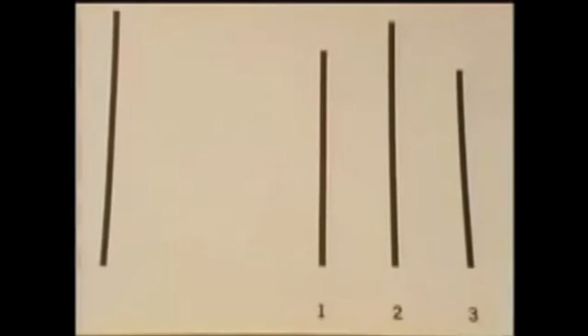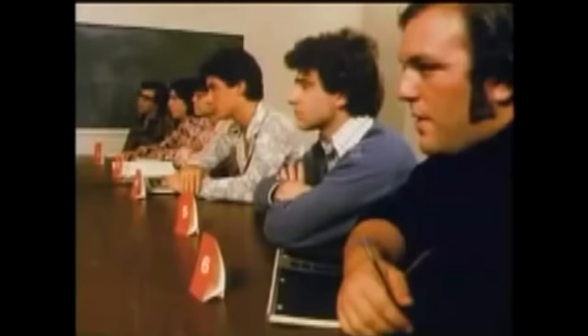They must be right — there are four of them and one of me. This subject's yielding is based on a distortion of his judgment. He genuinely believes that the group is correct.